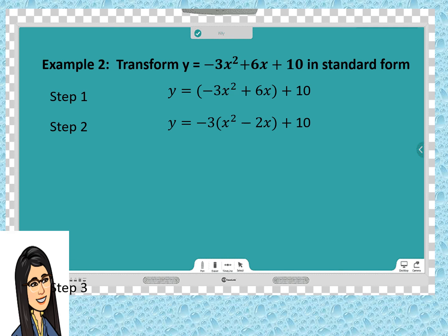For step 3, one half of -2 is -1. The square of -1 is 1, but we need to multiply it by the value of a. So, we added and subtracted (-1)² times -3. So, that we simplify into step 4.